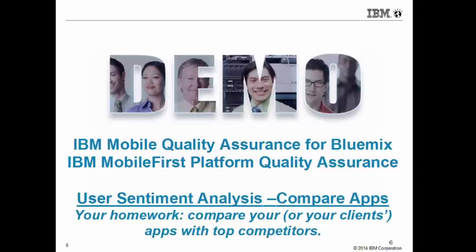Your homework is to get access to Bluemix and compare apps. If you're a client of IBM, compare your app with your top competitors. If you're an IBMer or IBM business partner, select some of your clients and compare them with their top competitors. That's the homework, and we'll review it on the next call, November 20th. We'll deliver similar content for our Australian teams in an Australian time zone, and we can also review any questions you might have for your homework.